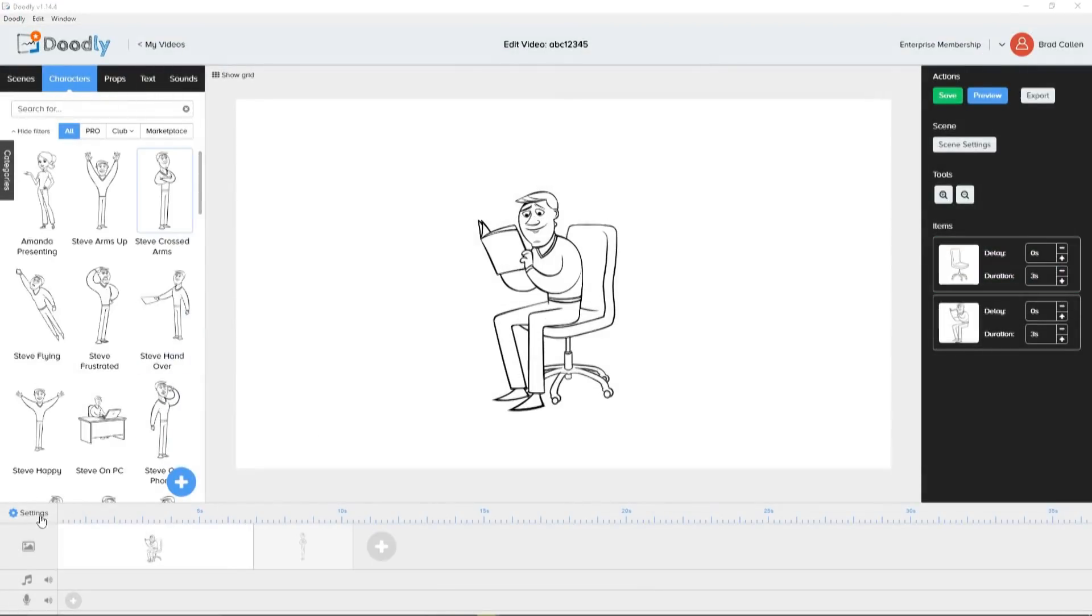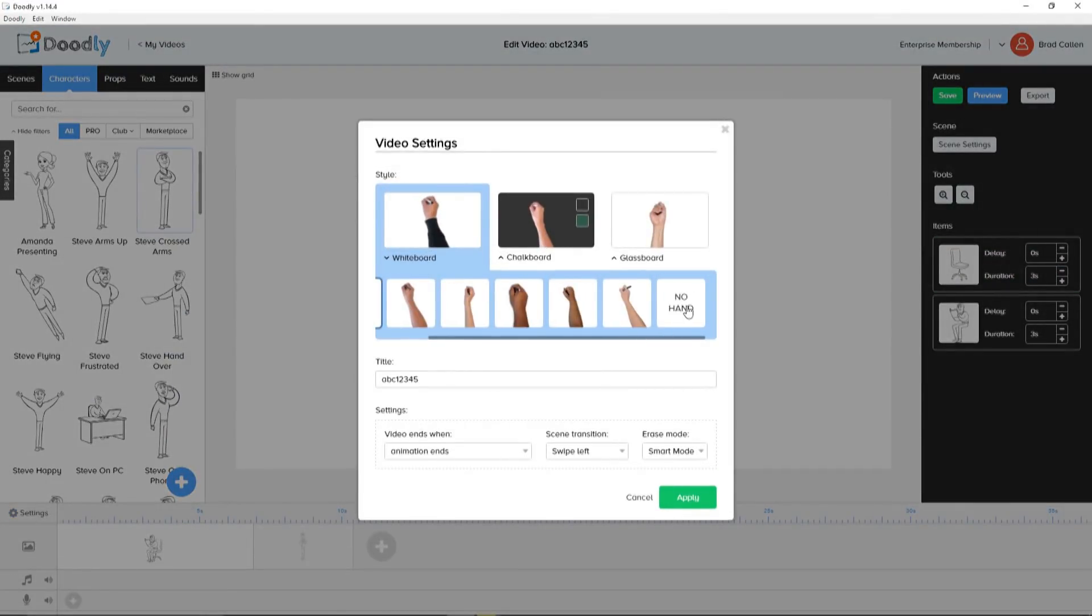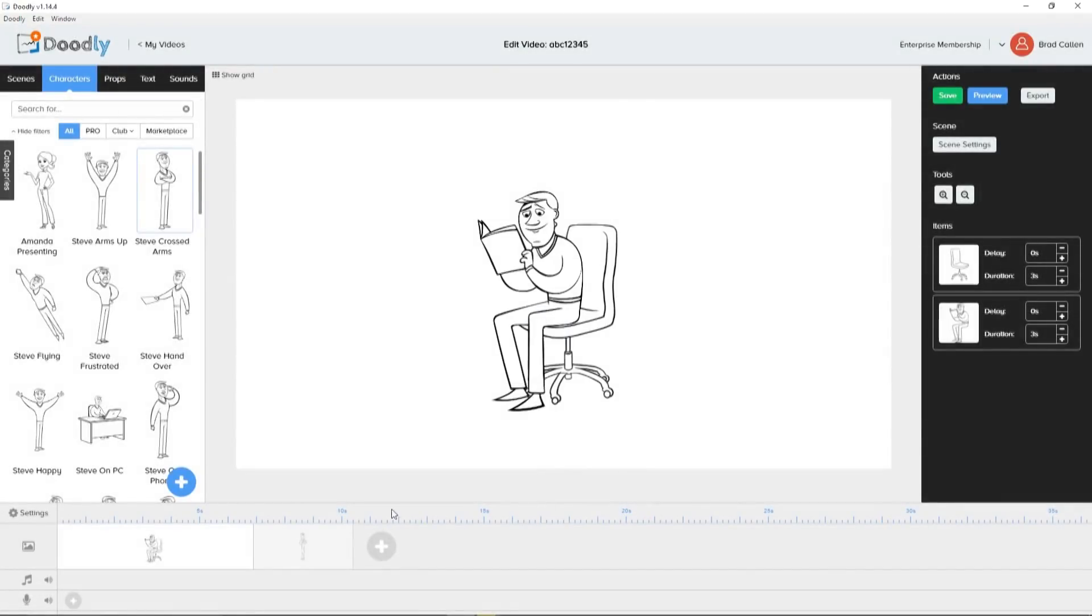Oh, and we have a bunch of really cool settings available, too. Different hands or none at all. Scene transitions with even camera panning. And our smart erase mode, as well, to continue to provide the realistic feel that you're looking for.